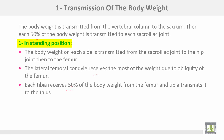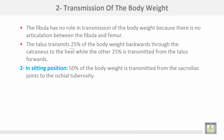Each tibia receives 50% of the body weight from the femur and transmits it to the talus. The fibula has no role in transmission of body weight because there is no articulation between the fibula and femur. The talus transmits 25% of body weight backward through the calcaneus to the heel, while the other 25% is transmitted from the talus forwards.